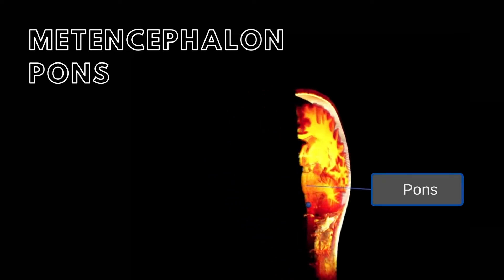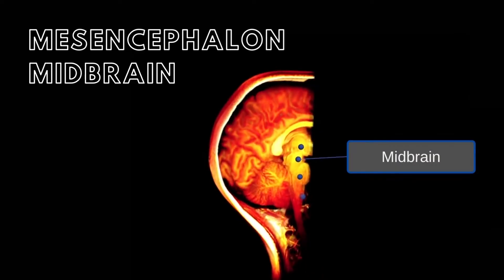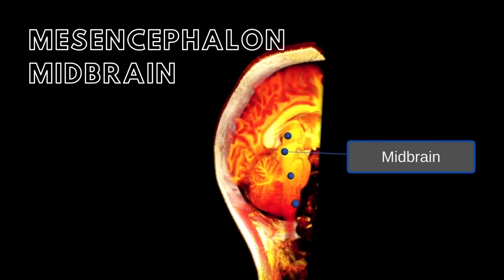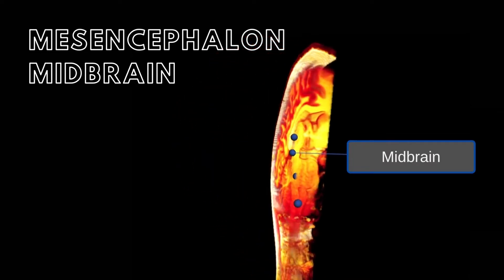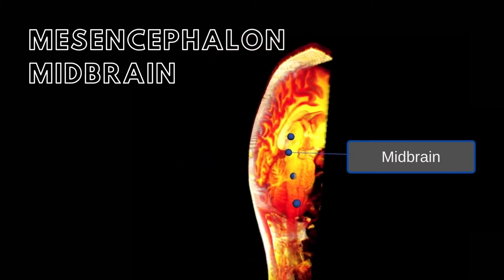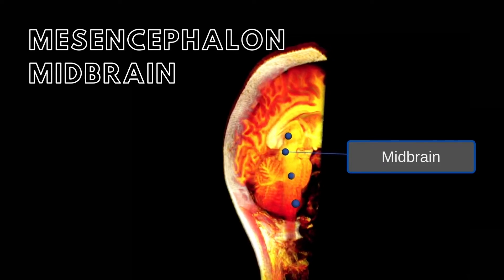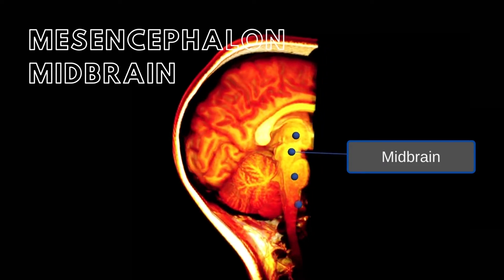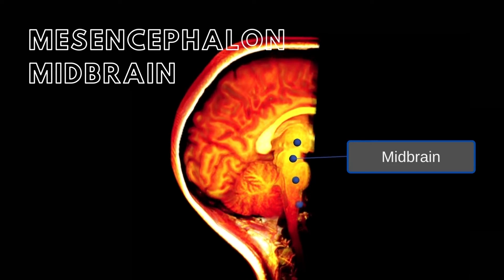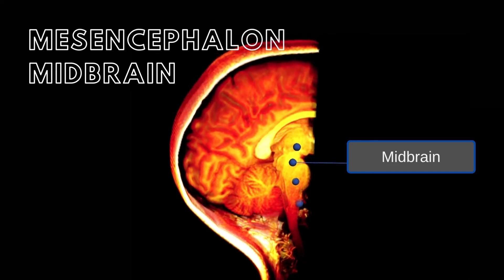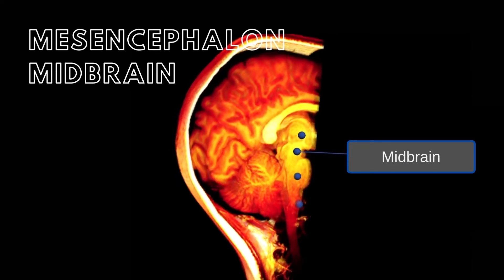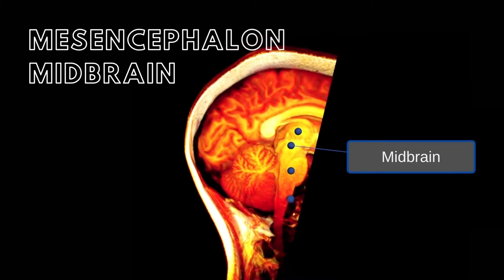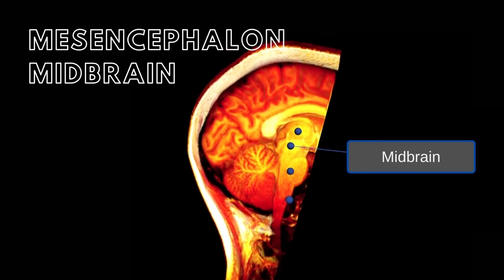The mesencephalon, or midbrain, is the smallest and least differentiated portion of the brain. This portion of the brain is composed of many relay centers concerned with processing auditory and visual reflexes, regulating motor function, communicating with the spinal cord, and being a relay center for the various brain centers.